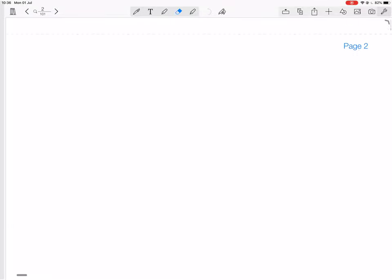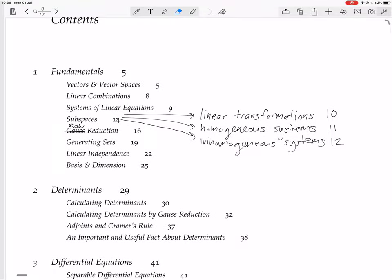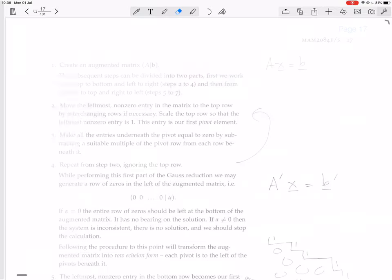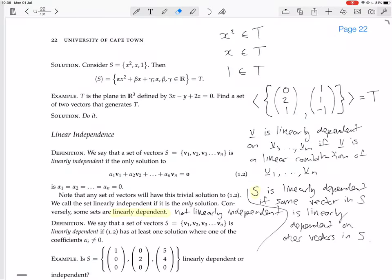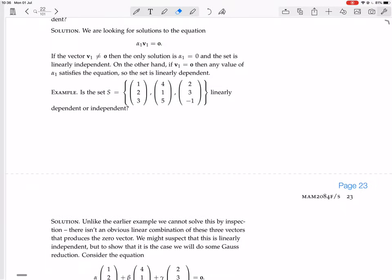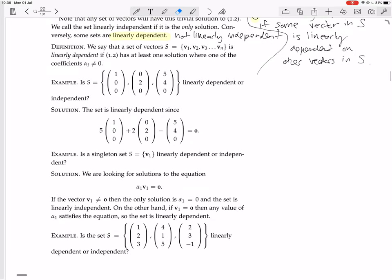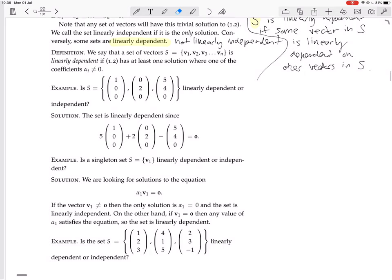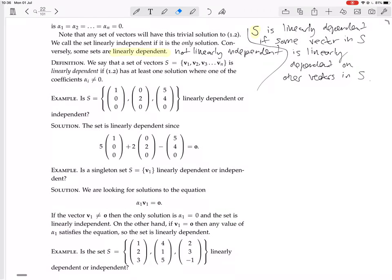Okay, so we're continuing to look at linear independence. So where were we? We had figured out that this set was linearly dependent because this linear combination gives you zero.